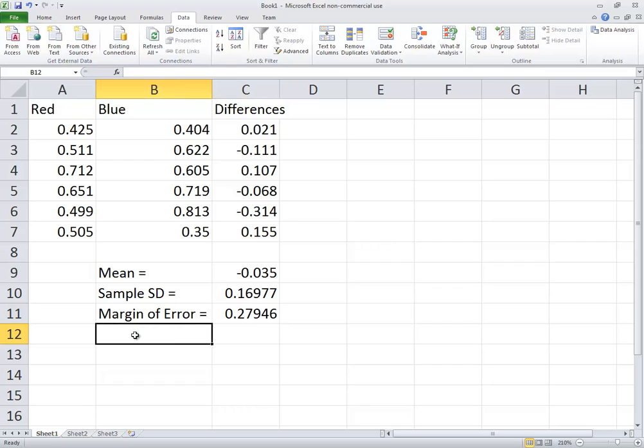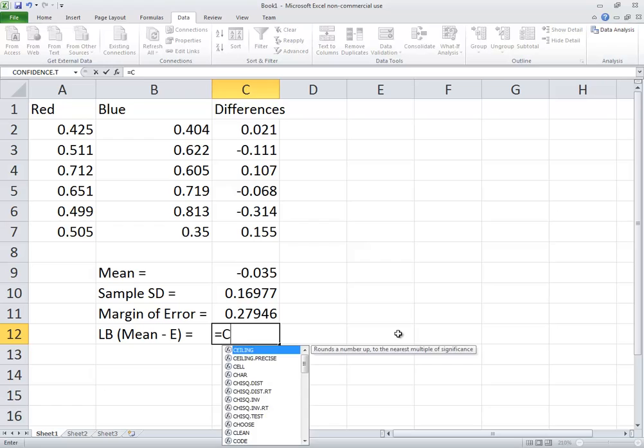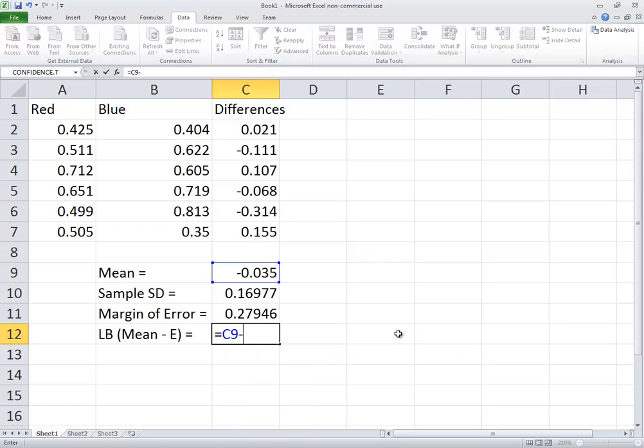Now your mean and your margin of error is what's going to give you your confidence interval. So our lower bound, that's going to be your mean minus margin of error. So I'll say mean minus E. So I'm going to do equals the mean, which is in cell C9, minus the margin of error, which is in C11. Enter.